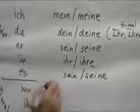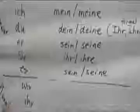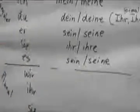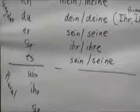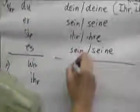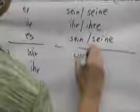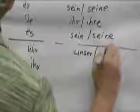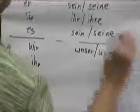So these are the possessive adjectives for ich to es. Now we have our books. We would say we, our books. So our is unser, or if it's a feminine noun, it's unsere.